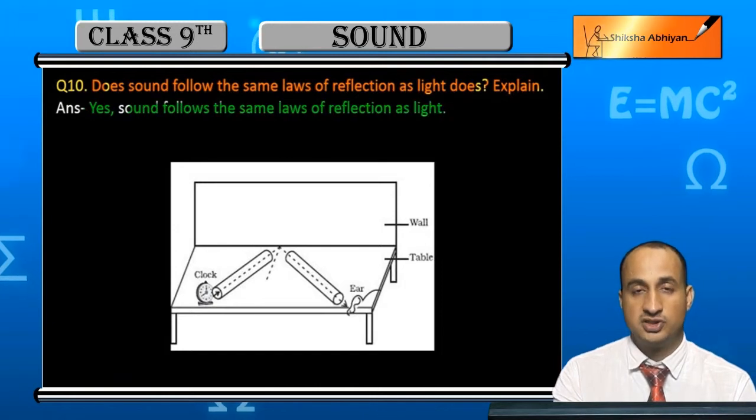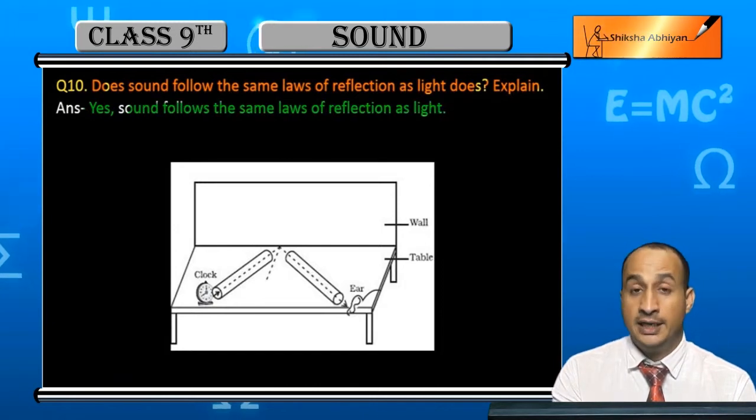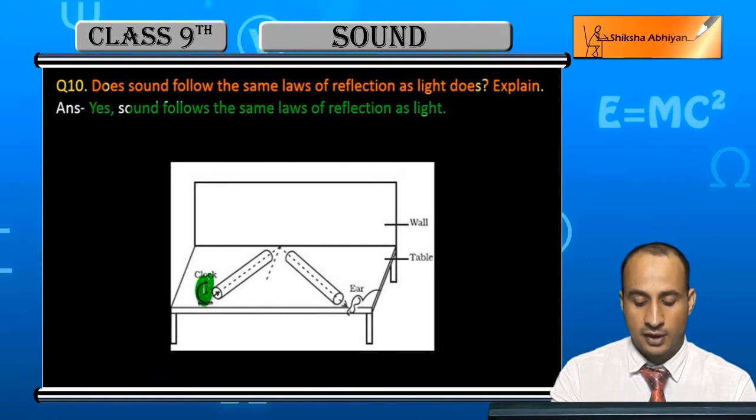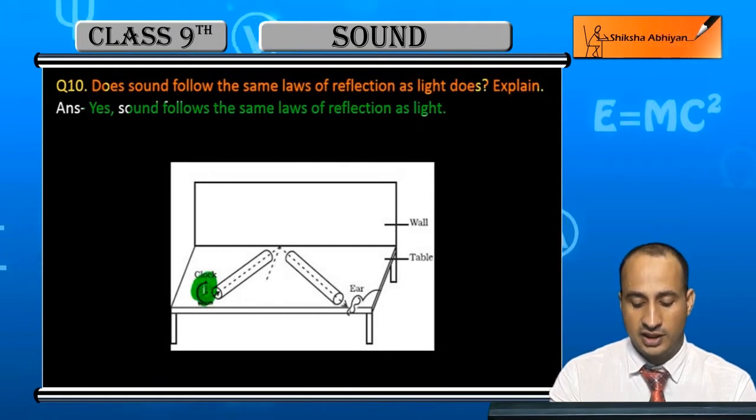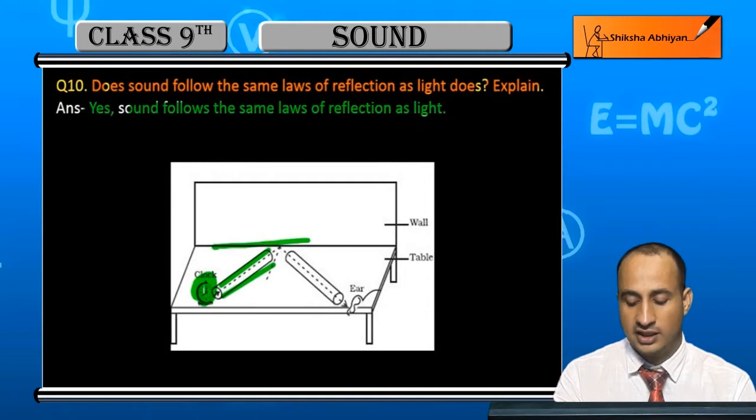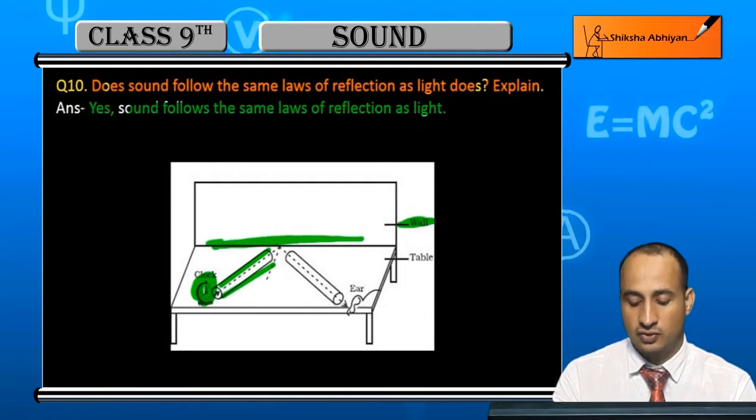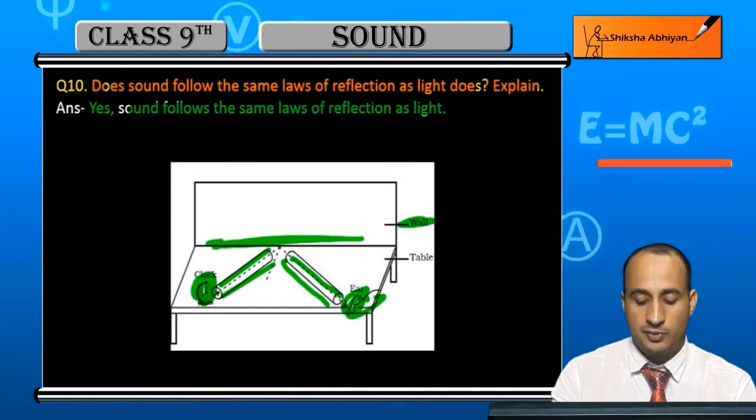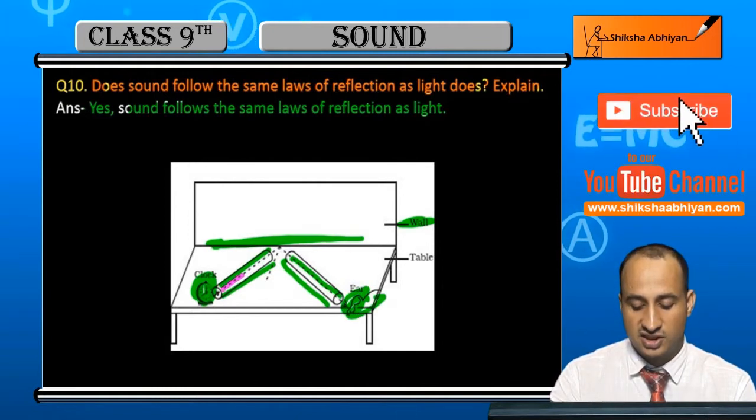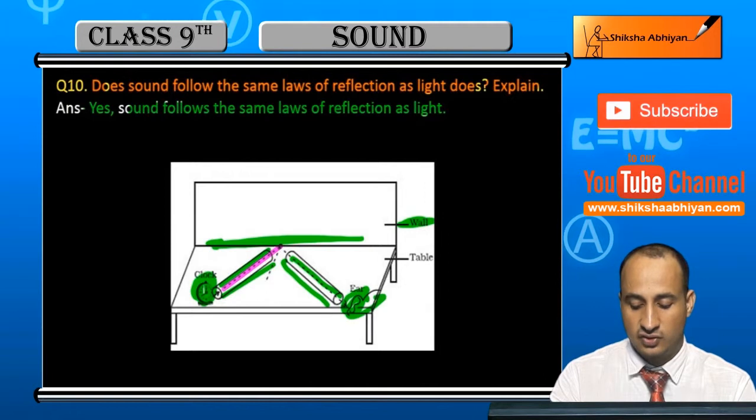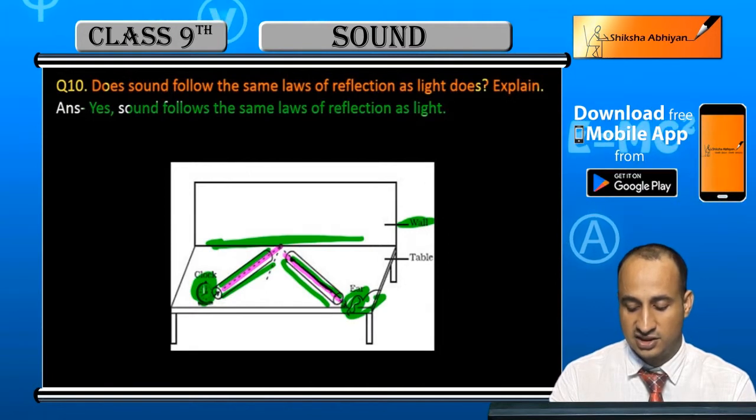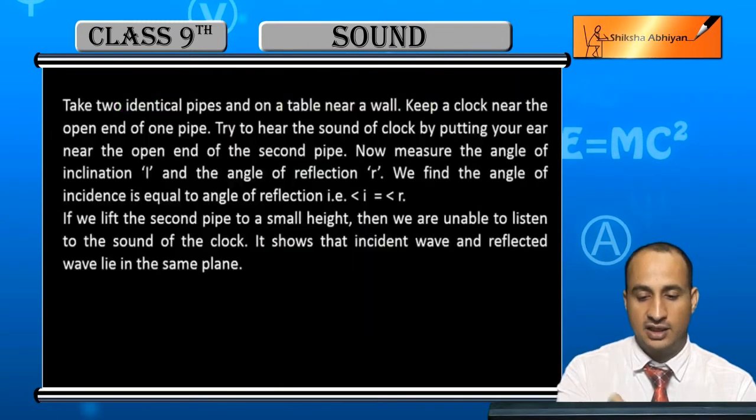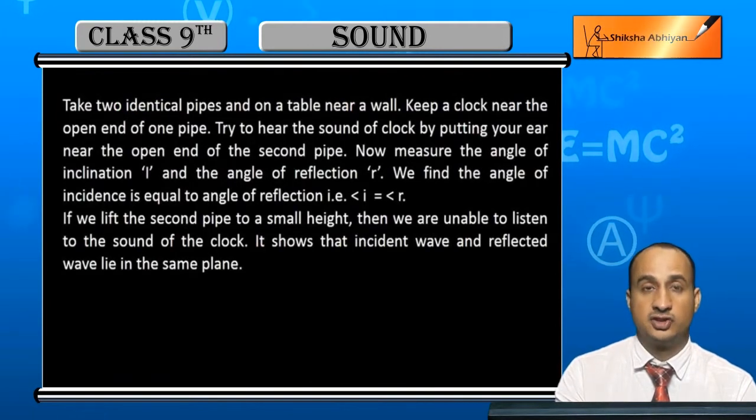I will explain to you a demonstration and experiment. Here we have a clock on the end, here we have a tube, and here we have a wall. This is the wall where reflection occurs. This is a tube and here we have our ears. Here we have sound propagation, sound is propagated here, we have reflection here, and here we have ears, the laws of reflection.